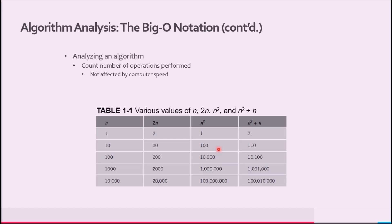While analyzing a particular algorithm, we usually count the number of operations performed by the algorithm. We focus on the number of operations, not on the actual computer time to execute the algorithm. This is because a particular algorithm can be implemented on a variety of computers, and the speed of the computer can affect execution time. However, the number of operations performed by the algorithm would be the same on each computer.